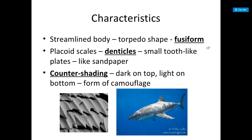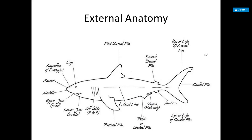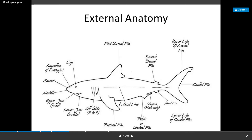They have counter shading, where they are dark on top and light on bottom, which helps them camouflage. Their anatomy is similar to other fish we've covered. Instead of an operculum they have gill slits, they still have a lateral line, sometimes ampullae of Lorenzini, nares, snout, eye, mouth, pectoral fins, first and second dorsal fin, caudal fin, and anal fin.